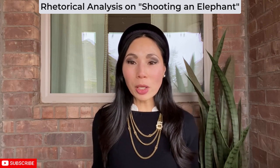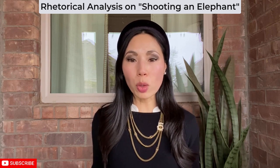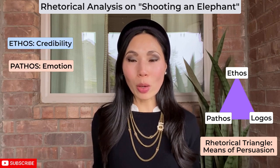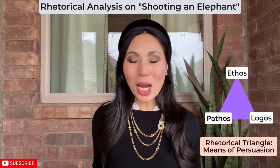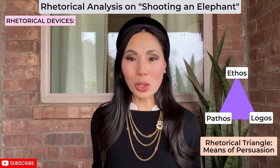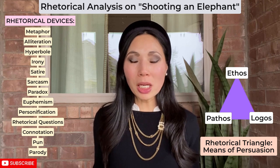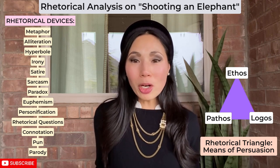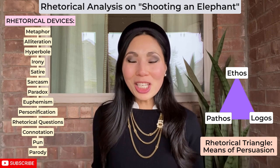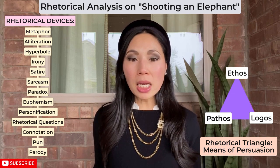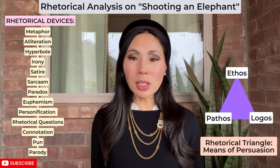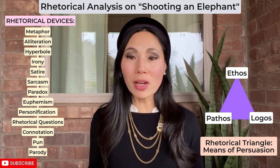Once the rhetorical situation is established, the writer will be able to determine the best ways to incorporate means of persuasion — specifically ethos or credibility, pathos or emotion, and logos or logic. A major way writers appeal to ethos, pathos, and logos is through rhetorical devices, which include but are not limited to metaphor, alliteration, hyperbole, irony, satire, sarcasm, paradox, euphemism, personification, rhetorical questions, connotation, pun, and parody. These devices help elicit emotions, put an audience in the right frame of mind, create trust between reader and writer, and provide the details and steps that the reader needs to make logical conclusions about the text or even the author.